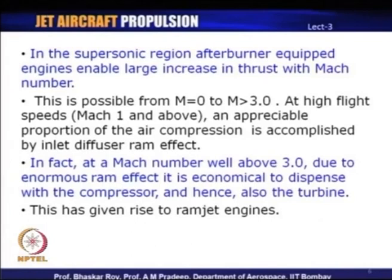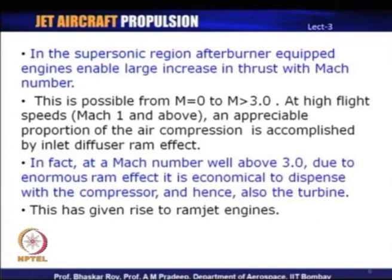At very high supersonic Mach numbers, if inlet compression can be done efficiently, you can create sufficient pressure to be utilized later in the nozzle to generate a high-velocity jet. In fact, at Mach numbers well above 3, due to the very high kinetic energy conversion — the ram effect — it is possible to even dispense with the compressors and hence also the turbine of a typical jet engine. These engines are simply called ramjet engines, and we shall discuss their thermodynamic cycle and aerodynamic performance later.